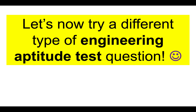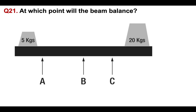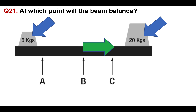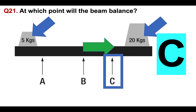Let's now try a different type of engineering aptitude test question. Question 21: at which point will the beam balance? We have a beam with two weights — 20 kilograms and 5 kilograms. Therefore we cannot balance it in the middle, so it can't be B. It needs to be to the right because the heavier weight is on the right-hand side and the lighter weight on the left. Therefore the only answer option could be C.